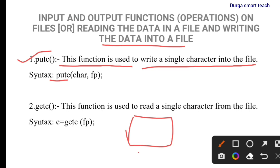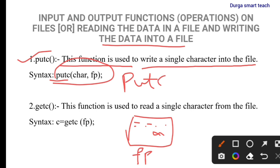For example, suppose this is a file in your system with file pointer fp. If you want to write one single character — say 'a' — into this file, you need to use putc. The syntax is: putc(h, fp), where fp is the file name and h is the character you want to add. That character is written into the file.